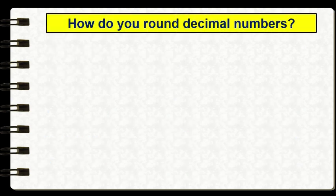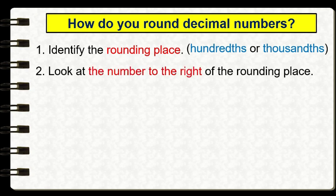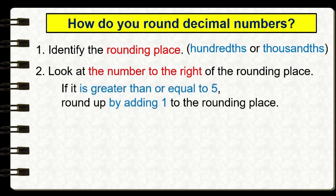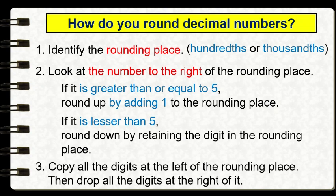When rounding decimal numbers, follow these simple steps: first, identify the rounding place — hundreds or thousandths. Second, look at the digit to the right: if it is greater than or equal to five, round up by adding one to the rounding place; if it is less than five, round down by retaining the digit. Third, copy all digits to the left of the rounding place. Finally, drop all digits to the right. Thank you for watching and see you in our next video lesson.